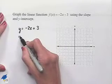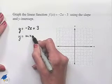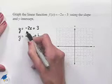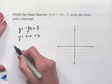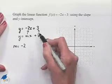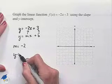We can identify that format as y equals mx plus b, and now see that the slope of the line is going to equal negative 2, and the y-intercept is going to equal the value of 3.